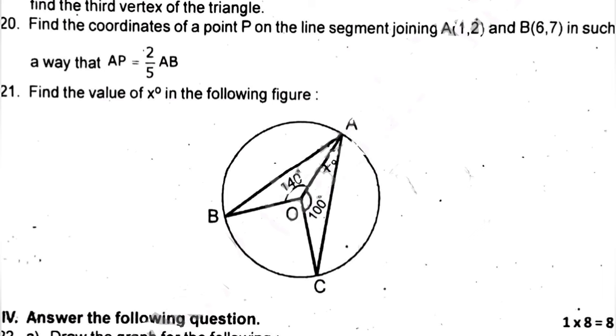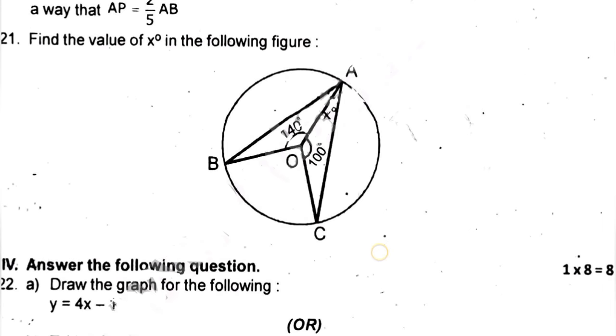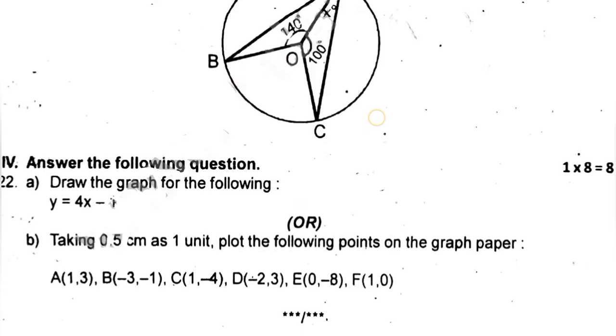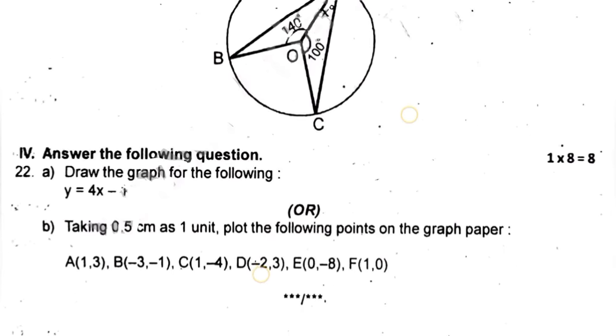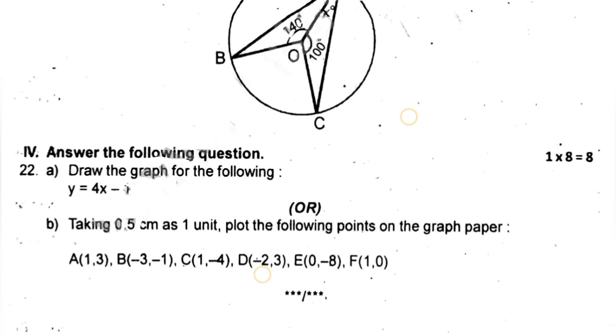Next, Roman number 4 is answer the following question, an 8 mark question. We already saw graph. Graph is missed. Graph is 8 marks, so 8 out of 8, we will do graph practice.